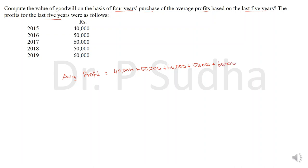Average profit equals the sum of profits of the previous years: 40,000 plus 50,000 plus 60,000 plus 50,000 plus 60,000 — that is 5 years — divided by 5. The total in the numerator is 2,60,000 divided by 5, giving an average profit of 52,000.